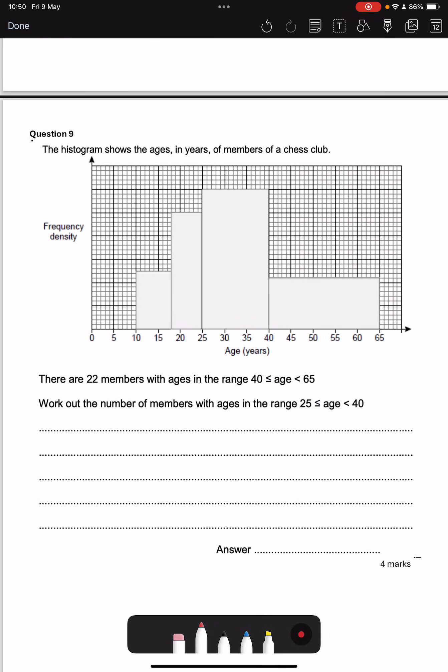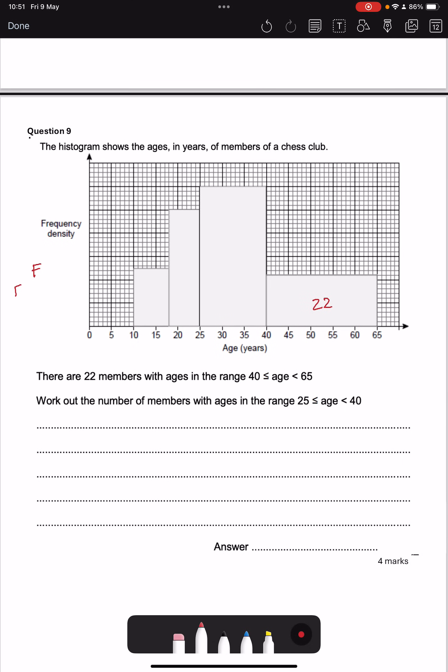Next question. We've got a histogram. There are 22 members with ages in the range of 40 to 65. So this is 22. The area. Because remember for a histogram we've got this formula triangle that we can use to help us. Where the frequency is the frequency density, which is my y-axis, times by my class width.